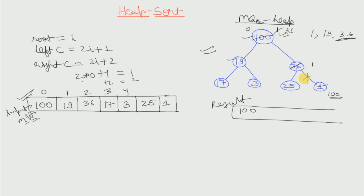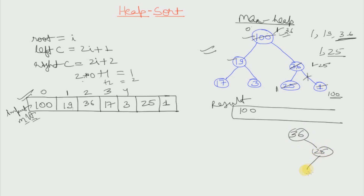This max heapify will go on — we can also call it percolate down, like water percolates through the earth. Now this 1 will be compared with its left and right child. It has no right child because we have unlinked it, so it will only be compared with the left child. We have two elements in consideration: 1 and 25. Since 25 is the largest, it will replace 1. So the heap will now look like: 36, 25, 1, 19, 17 and 3.